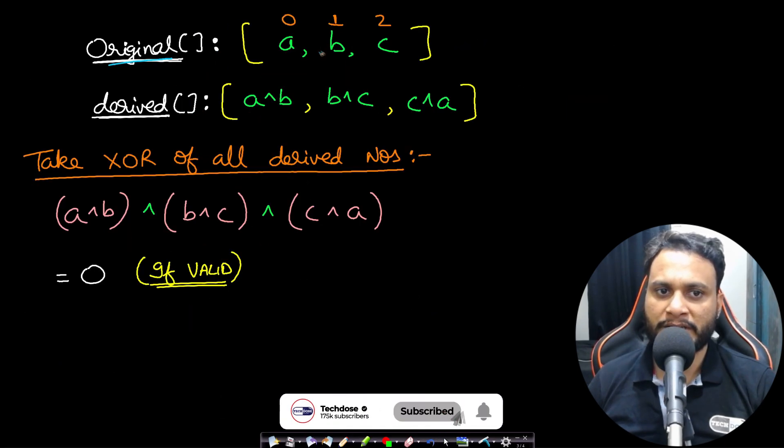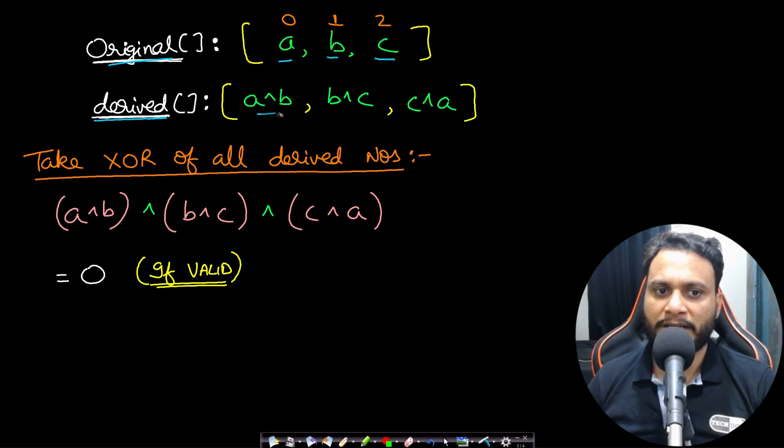Now if we look at a general case where the original array is having [a, b, c], then the derived array must be containing a XOR b, b XOR c, c XOR a. So what happens if we take the XOR between all of these elements of the derived array?